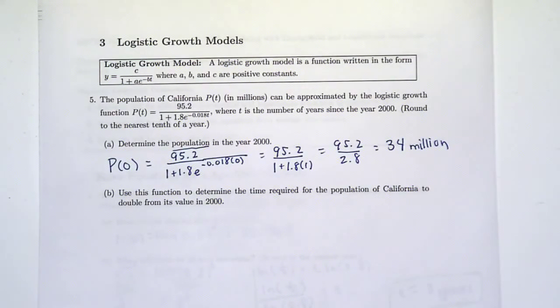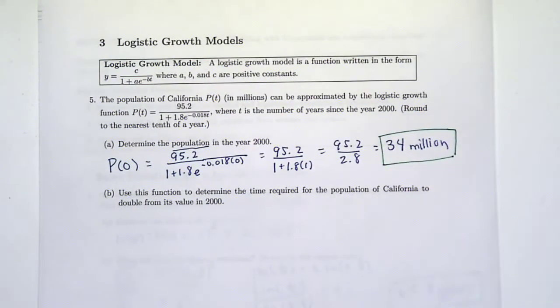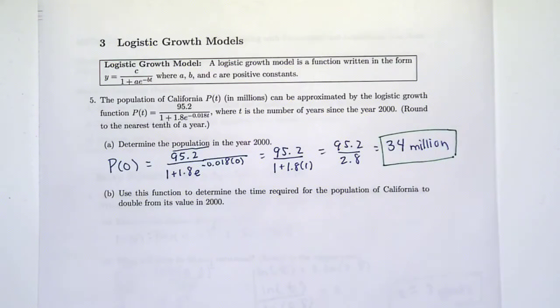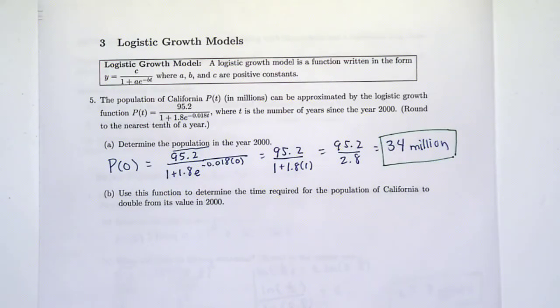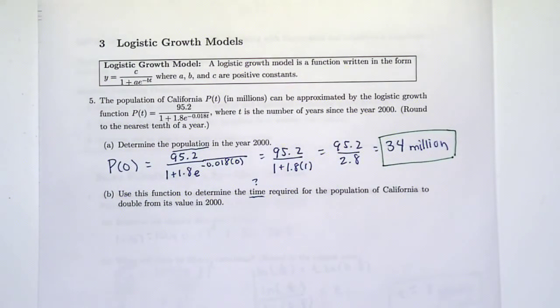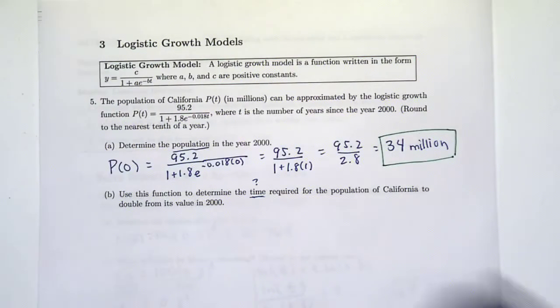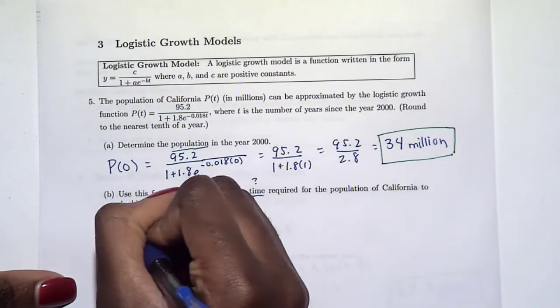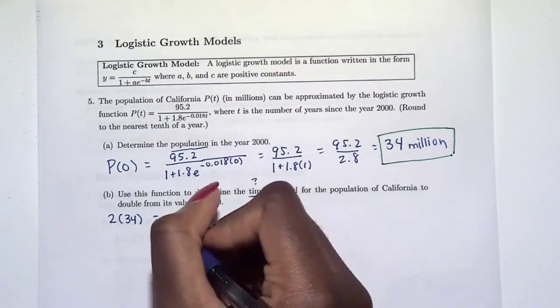Part b says use this function to determine the time required for the population of California to double from its value in 2000. We want to find the time that it takes for the population to double. We're going to use this, but our population amount is going to be 2 times its original, so 2 times 34 is our function.